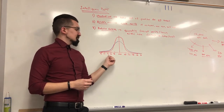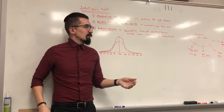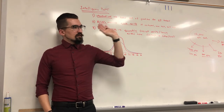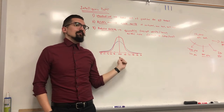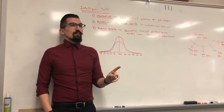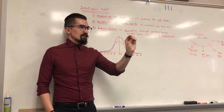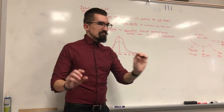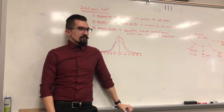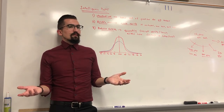The same phenomenon occurs at the high end: at the ultra-genius level, there are also five to six times more men. This doesn't mean men are smarter than women — the averages are the same — it just means at the most extreme ends of the distribution, men are overrepresented in both directions.